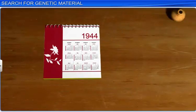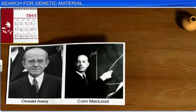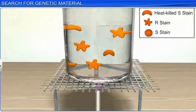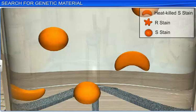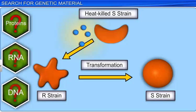Later, after 16 years, in 1944, a team of three scientists — Oswald Avery, Colin McLeod, and Macklin McCarty — once again began research on the experiment that was once conducted by Frederick. At that time, they tried to identify the biochemical nature of the transforming principle in Frederick's experiment. For this, the scientists first purified biochemicals such as proteins, DNA, and RNA, or ribonucleic acid, from the heat-killed S strain bacteria, to identify the biochemical responsible for transforming the live R strain into S strain bacterial cells.